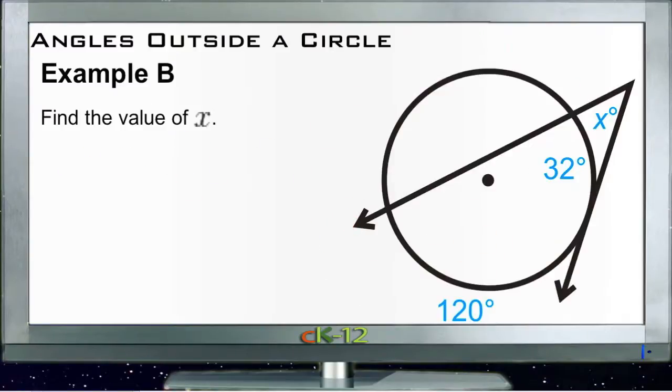Example B, very similar. Looking for angle x and we have two different arcs. We have a 120 degree arc out here and we have a 32 degree arc in here.